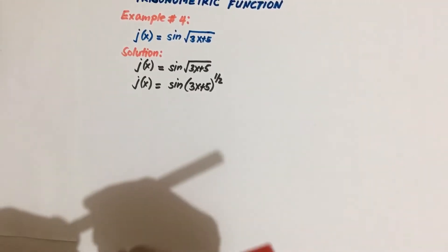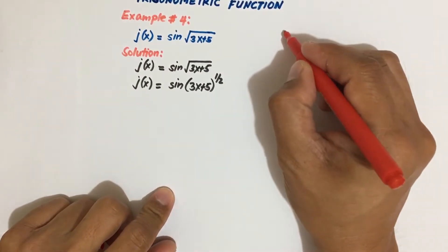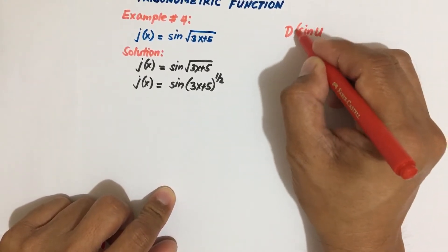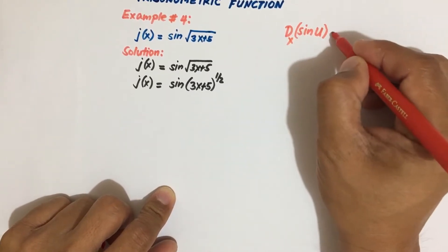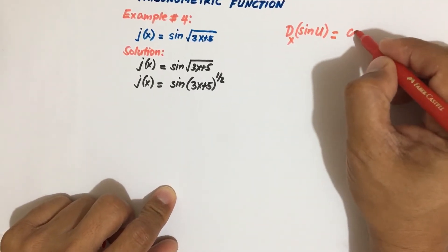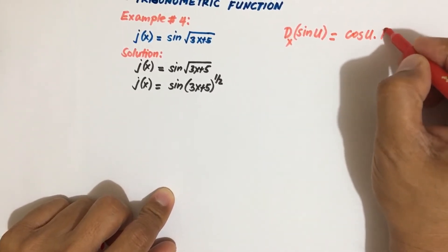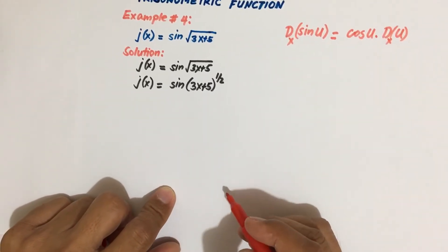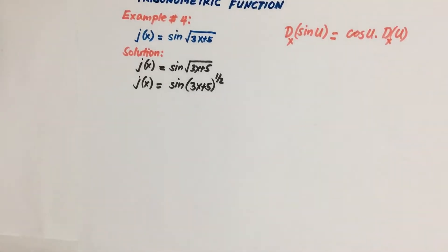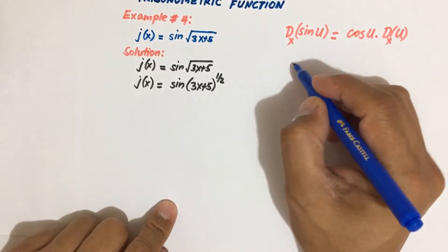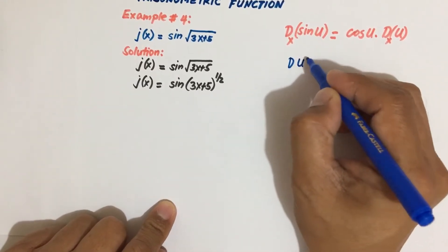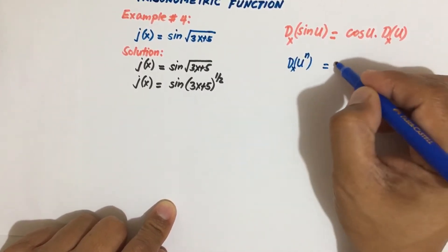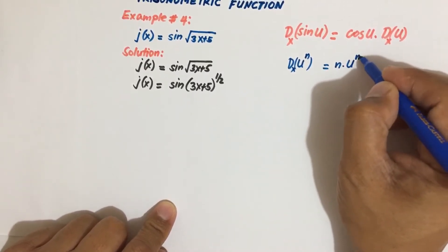Now, what formula shall we use? We have the derivative of sine u with respect to x, which is equal to cosine u times the derivative of u with respect to x. We also have to use the power rule: the derivative of u to the n is equal to n times u to the n minus 1 times the derivative of u with respect to x.